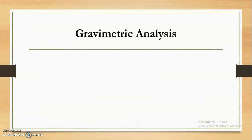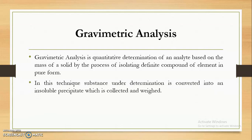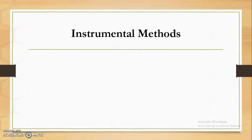The next type of classical method is gravimetric analysis, which is based upon the measurement of weight of a substance. In gravimetric analysis, it is a quantitative determination of the analyte based on the mass of solid by the process of isolating a definite compound of an element in pure form. In this technique, the substance under determination is converted into an insoluble precipitate, which is collected and weighed. Our analyte reacts with a standard reagent to form an insoluble precipitate, which is then collected — in this way gravimetric analysis is performed.